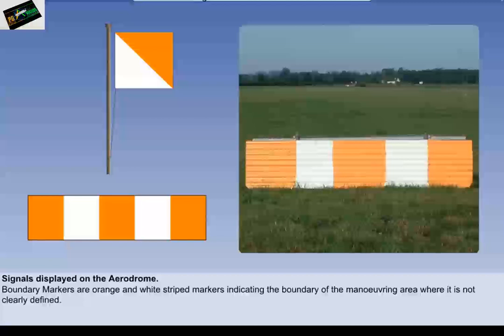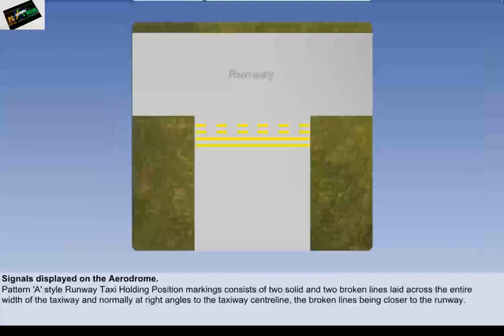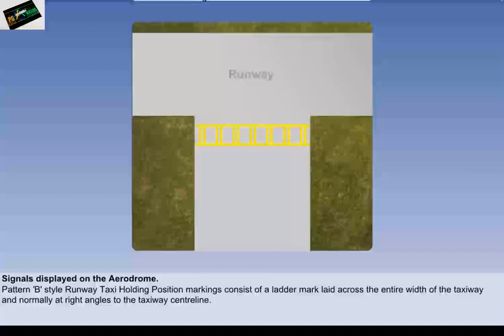Runway taxi holding positions are established on each taxiway leading to a runway in order to protect aircraft on take off and landing by ensuring that other taxiing aircraft and vehicles are held well clear of the runway and, where appropriate, outside the ILS sensitive area. There are two styles of runway taxi holding position marking, patterns A and B. A pattern A style consists of two solid and two broken lines laid across the entire width of the taxiway, the broken lines being closer to the runway. A pattern B style consists of a ladder mark laid across the entire width of the taxiway.